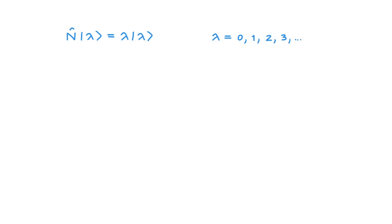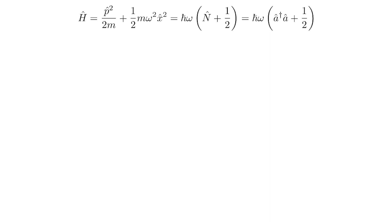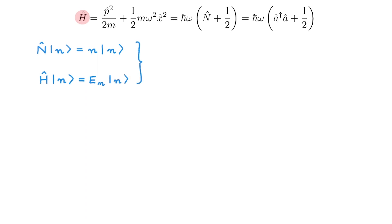To recapitulate: this is the eigenvalue equation of the number operator. The eigenvalues of the number operator can only be 0 or positive integers. Given this result, rather than labelling the eigenvalues by λ we typically use n, and the eigenvalue equation becomes N|n⟩ = n|n⟩. This means the eigenvalues of the number operator are quantised. We're now ready to go back to the Hamiltonian of the quantum harmonic oscillator. The Hamiltonian has the same eigenstates as the number operator, so we can write down its eigenvalue equation and immediately build the energy eigenvalues.